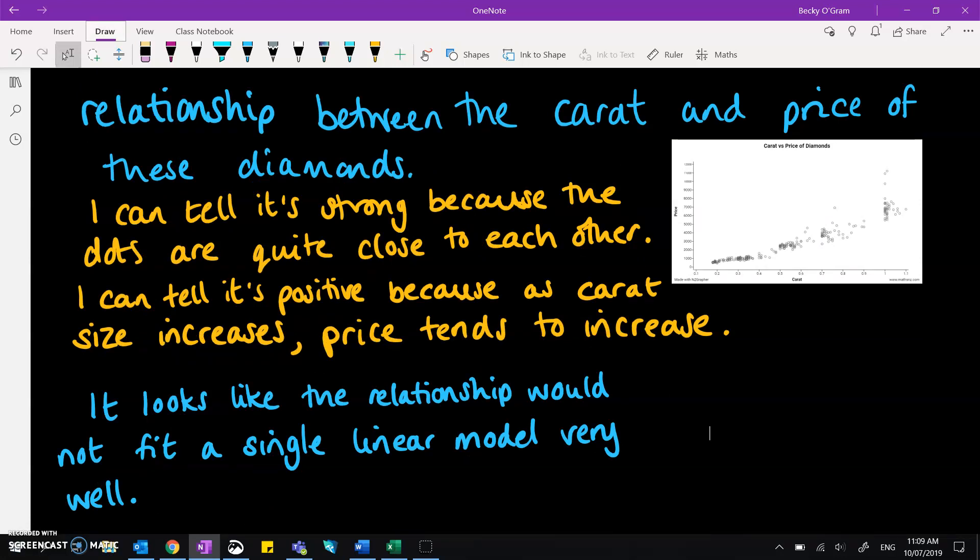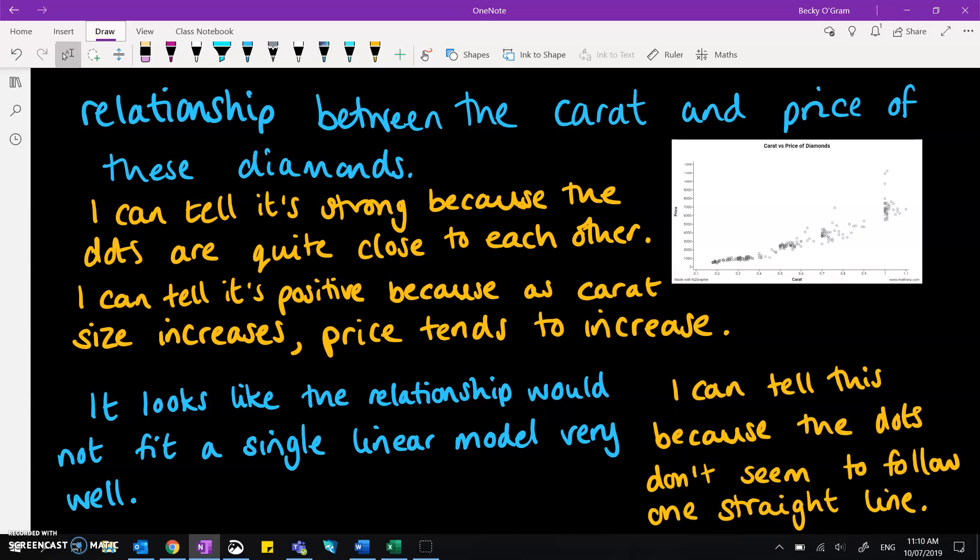We can do the same when we're looking at whether it was linear or not. So it looks like the relationship would not fit a linear model very well. I can tell this because the dots don't seem to follow one straight line. Now you would want to expand on that.